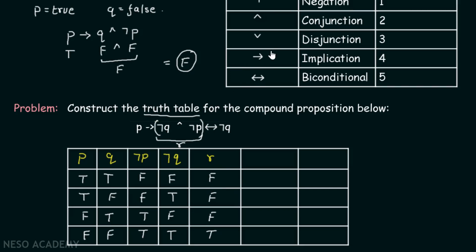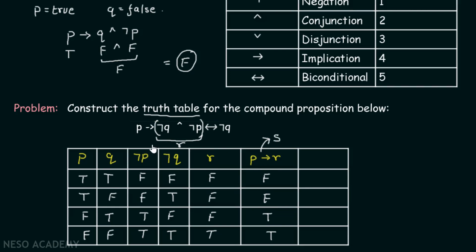Implication has higher precedence than biconditional, so we calculate P implies R next, calling it S. True implies false is false, true implies false is false, false implies false is true, and false implies true is true.